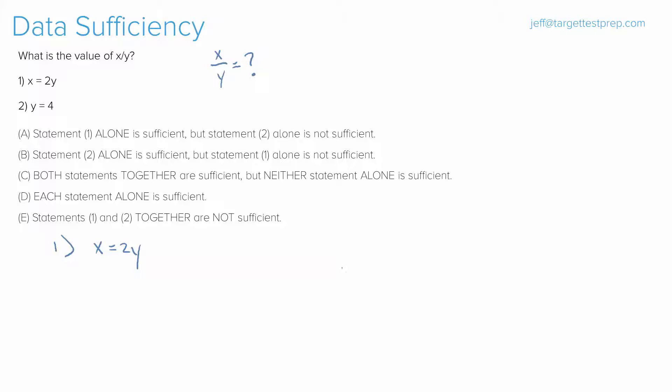Why is this important? Well, because when you take 2y and you sub it in for x, you get 2y over y and you'll notice right away that the y's cancel and you're left with 2. Now, what's interesting is this is enough to solve for the question, even though looking at statement one, it appeared like it wasn't going to be enough information.